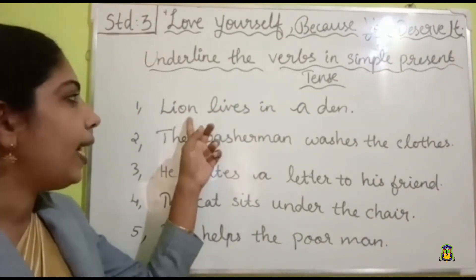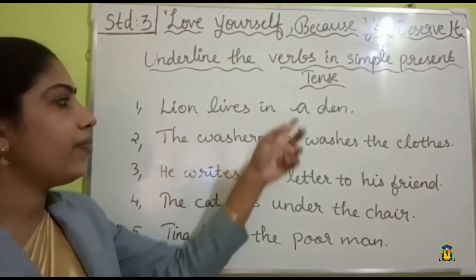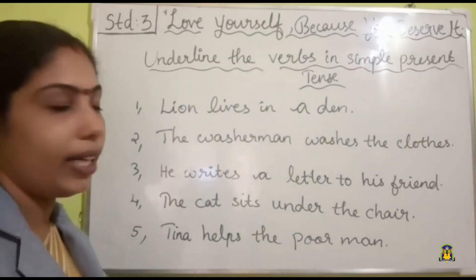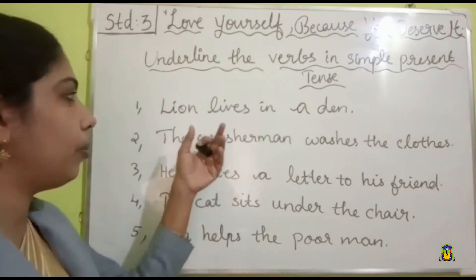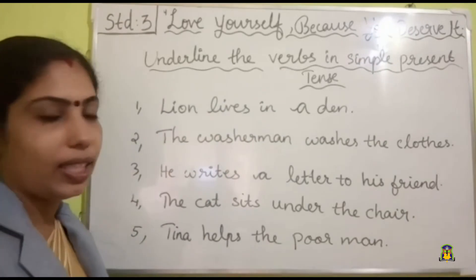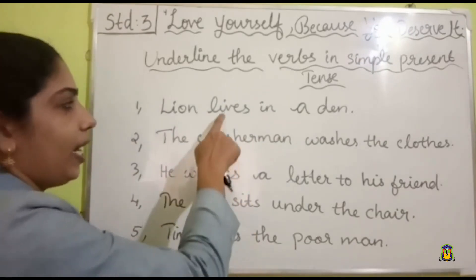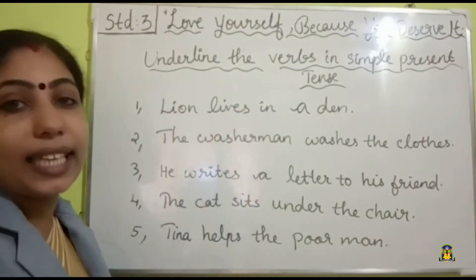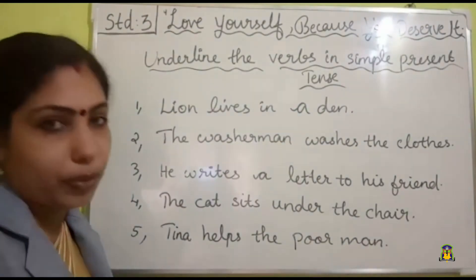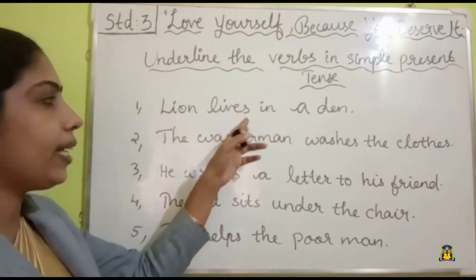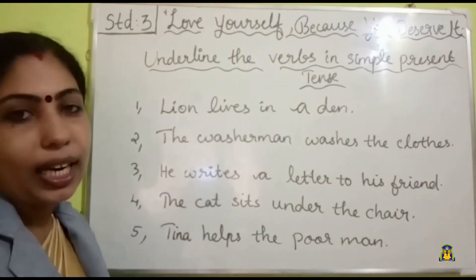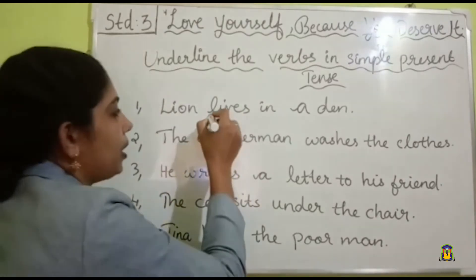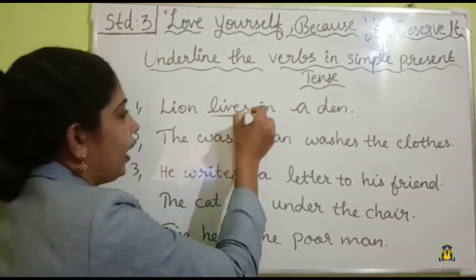See the first question: 'Lion lives in a den.' Here, what is the verb in the sentence? Yes — 'leaves' (lives). Lion is a singular subject, so we added S to the verb. The verb here is 'lives.'